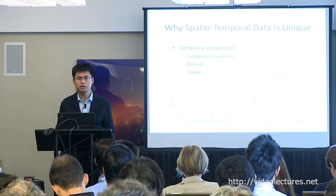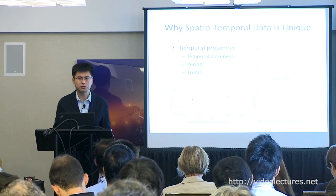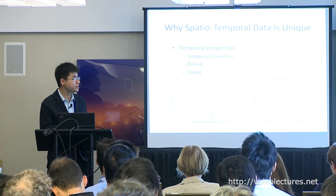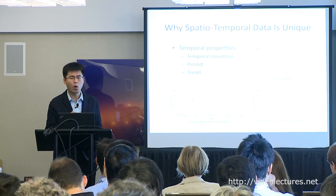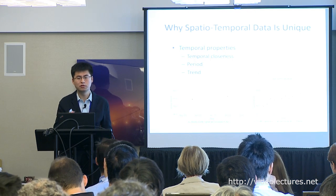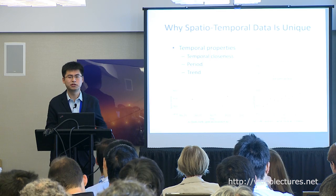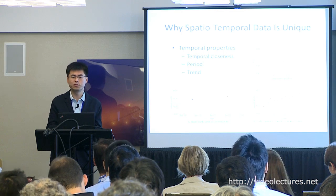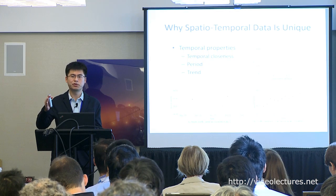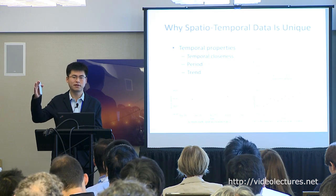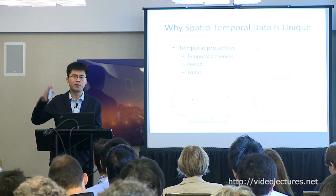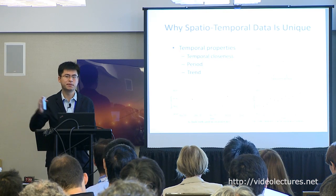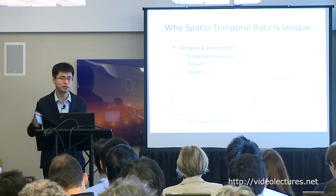Regarding temporal information, there are three perspectives that make spatial-temporal data unique. The first is temporal closeness. The temperature of the current hour is more similar to the temperature of the past hour, and as the time interval increases, the similarity decreases.